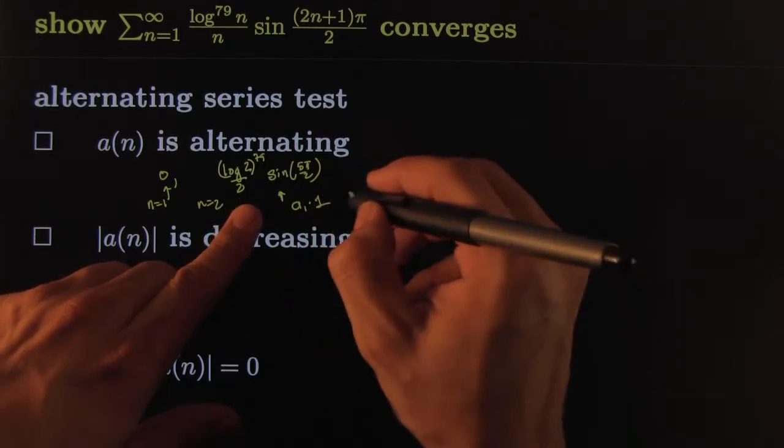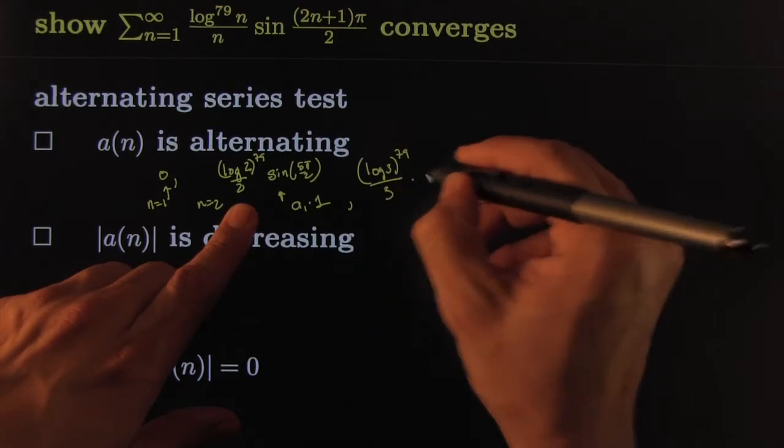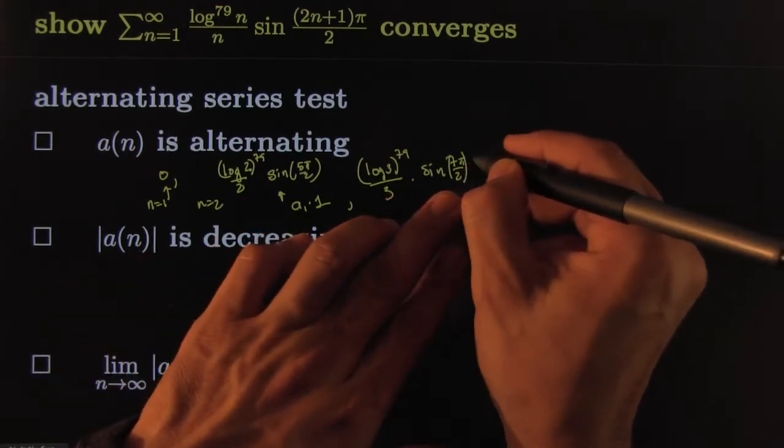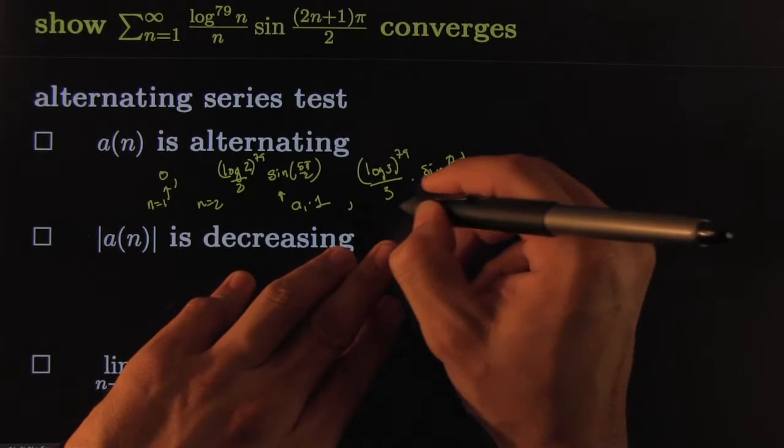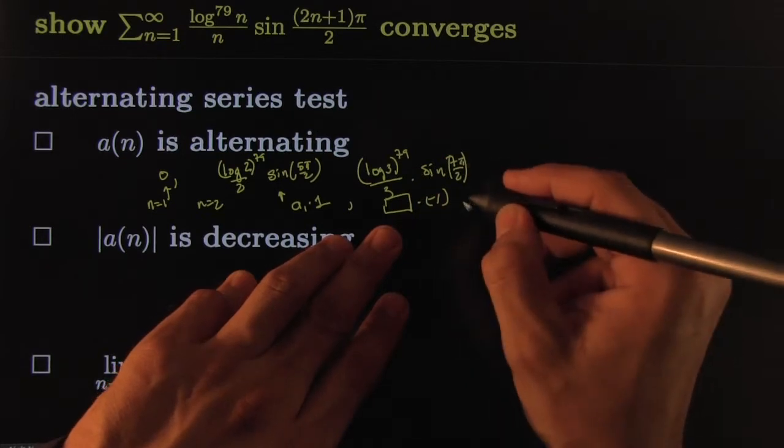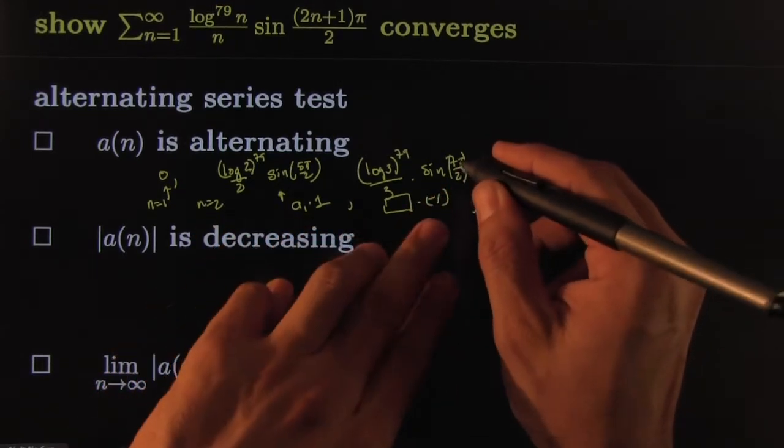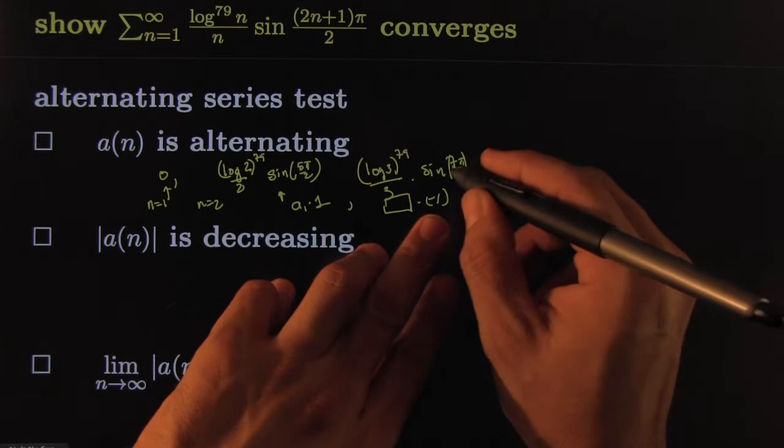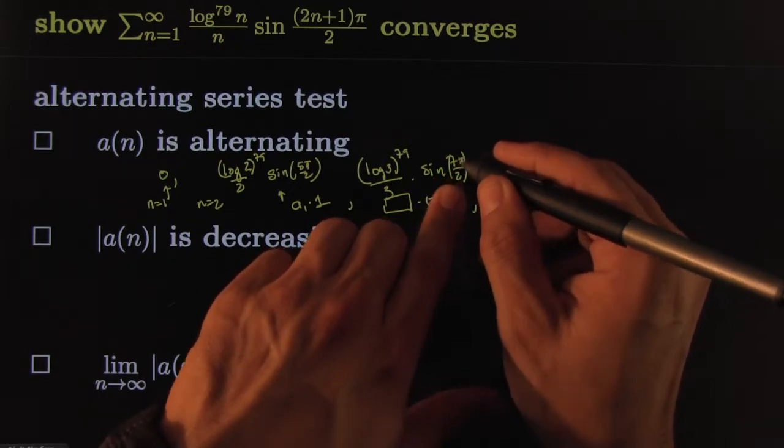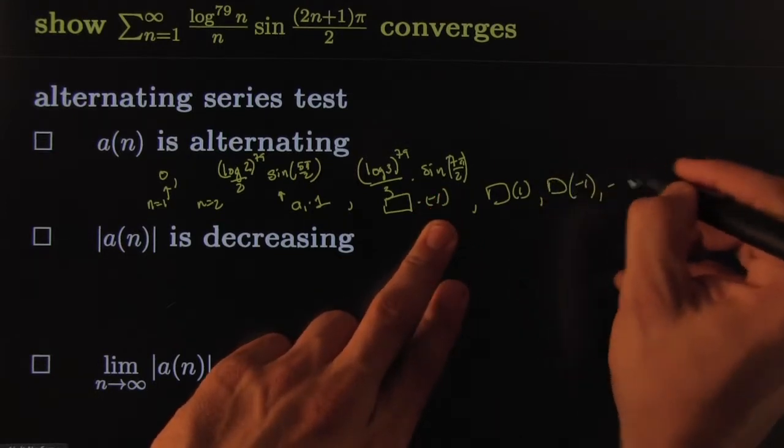The next one, you'd have some other number. Log 3 raised to the 79th power, divided by 3 times sine of 7 pi over 2. That would be 3 half pi over 1 period. This would give you negative 1. So this would be that number times negative 1. And of course, this number is positive. And so you see that this one's the one that's changing the sign. It's sort of a negative 1 to the nth in disguise. The next one would be some number times positive 1.